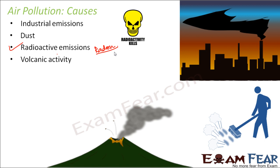Volcanic activity also produces harmful gases like sulfur, chlorine, and ash, which can cause air pollution. Smoke from fires also produces carbon monoxide. Please remember that carbon monoxide is a harmful gas which is not at all desirable in the environment.